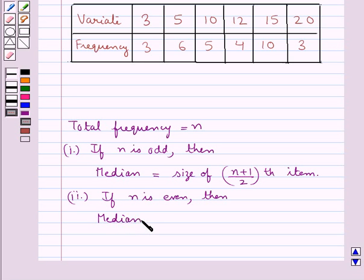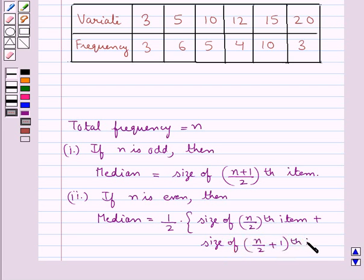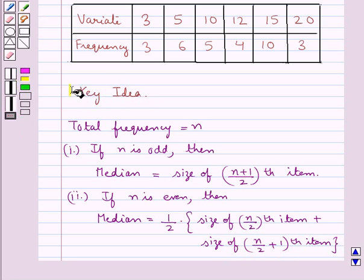And if n is even then the median is given by half of the size of n upon 2th item plus the size of n upon 2 plus 1th item. This is the key idea to be used in this question.